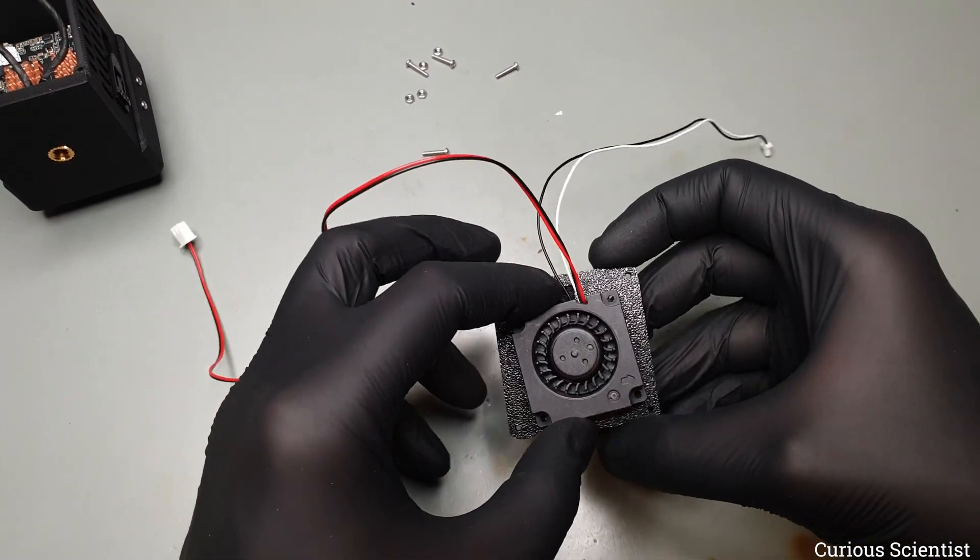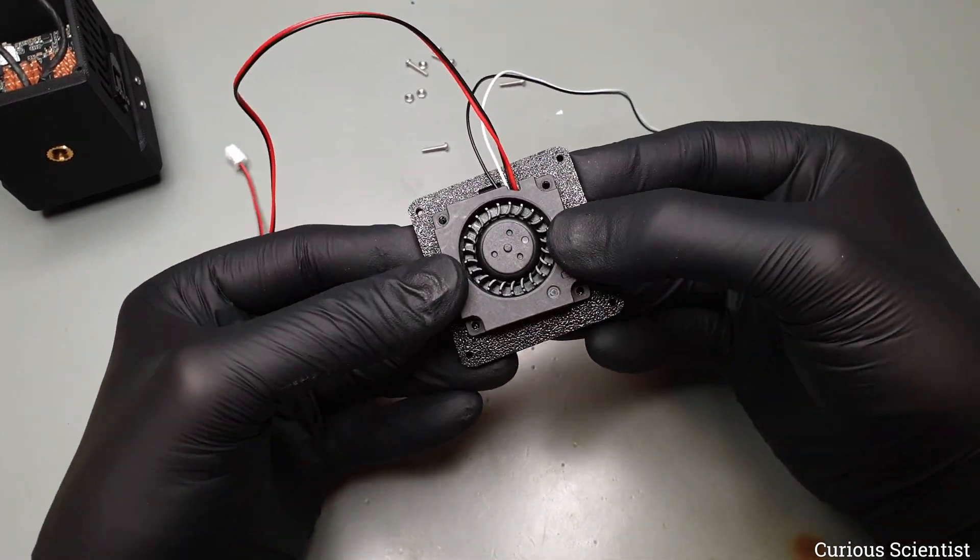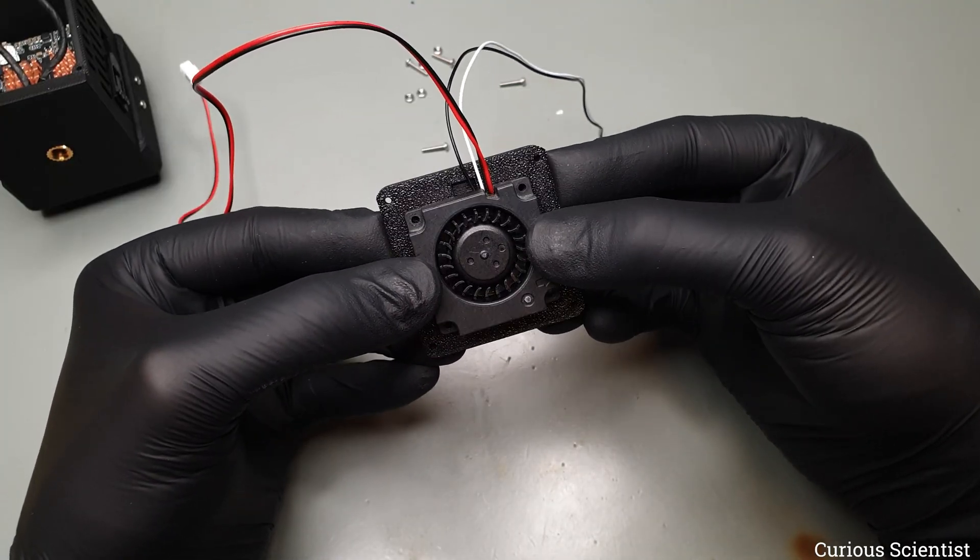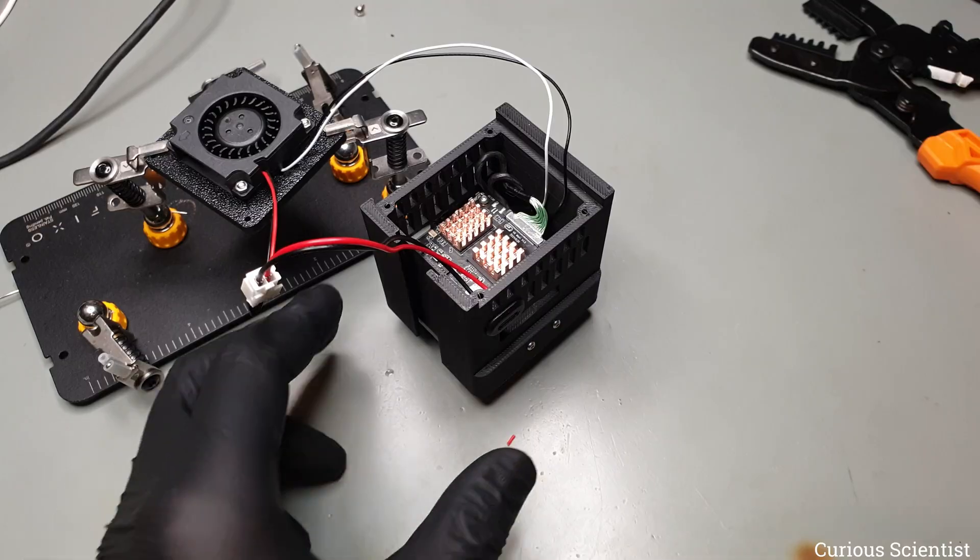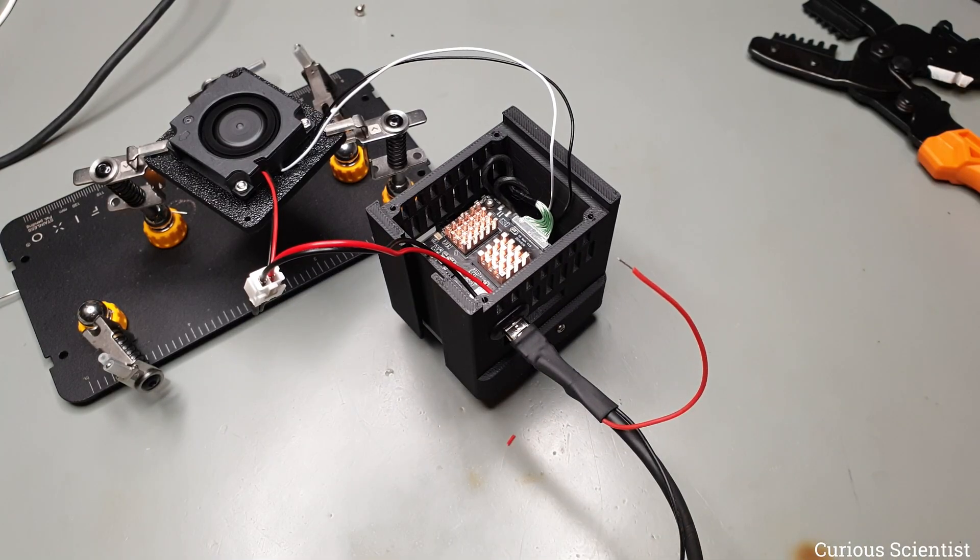Now we can proceed further to the rear panel of the module. This has 3 main roles. First it closes the camera's enclosure. Then the 30mm radial fan is also attached to it. The fan sucks the air out from the enclosure and blows it out through the holes on the side of it.